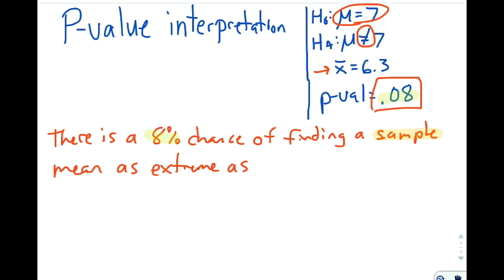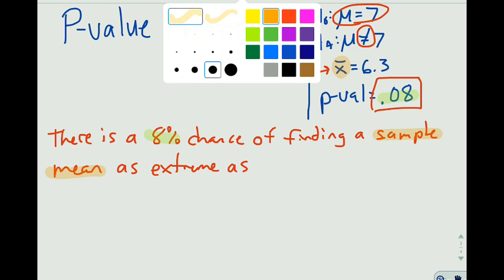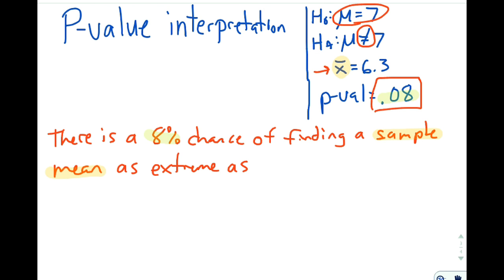I said sample mean instead of sample proportion because I know I'm dealing with x-bar. I also used the word as extreme as instead of as low as or as high as because of my alternative hypothesis being not equals. If it was less than, I would say as low as. If it was greater than, I would say as high as. Because it's not equals, I'll say as extreme as because that means both directions.